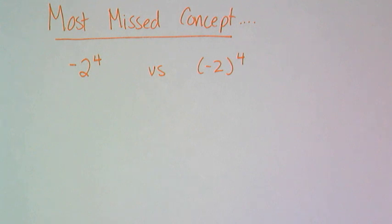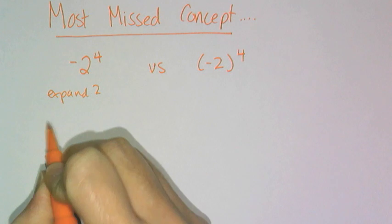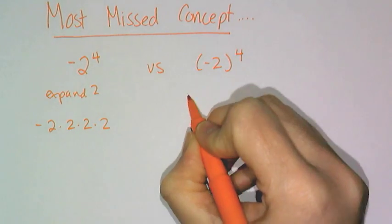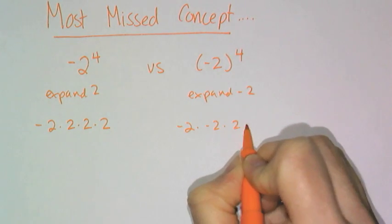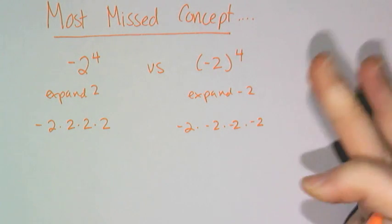Since we are dealing with exponents again we have to remember this most missed concept in algebra. I believe on like the first or second day that I taught you stuff. We talked about how these two expressions are different. And in this case what you expand is just the two. So you have one negative sign and four twos. And in this case you expand negative two. So you have negative two multiplied together four times.